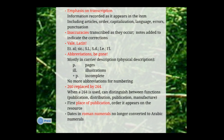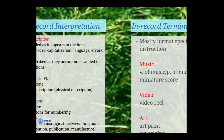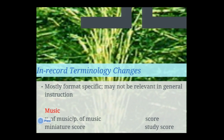One thing to note: dates that appear in Roman numerals in materials will be written out as Roman numerals still — like MCMXII. So that might be one interpretation change that will require librarians to know how to read Roman numerals — we all learned that in grade two. There are also in-record terminology changes, but most are format-specific. If you're training music librarians or visual and performing arts librarians, it will be important to address these. If not, you can leave them as a side note.